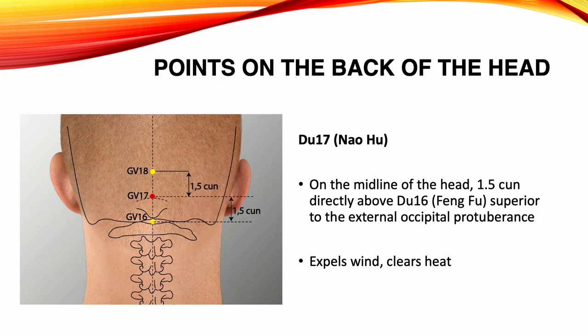Du 17, Nao Hu. Location: on the midline of the head, 1.5 Sun directly above Du 16, superior to the external occipital protuberance. Functions: expels wind, clears heat. Indications: headache, stiffness of the neck, vertigo, insomnia, seizures.